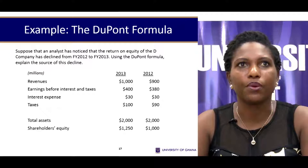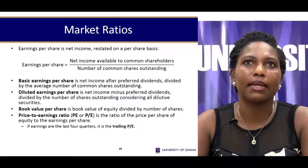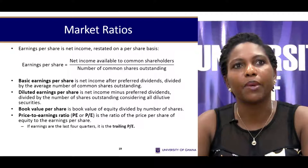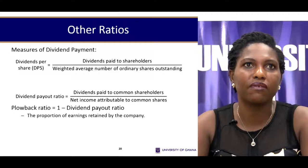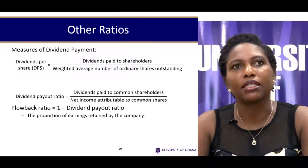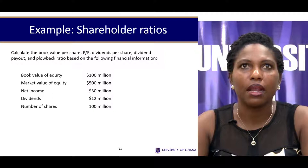There is also a category that applies mostly to listed firms: market ratios. These include earnings per share, book value per share, and PE ratios, which are relevant for making investment decisions — specifically whether to invest or not invest in a listed firm based on these figures.